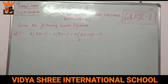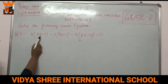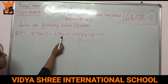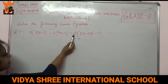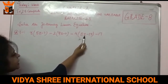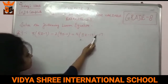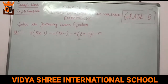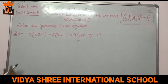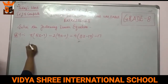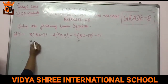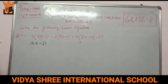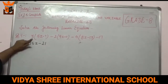Now this is question number 8: 3(5Z minus 7) minus 2(9Z minus 11) equals 4(8Z minus 13) minus 17. Bracket means multiply. So 3 times 5Z gives 15Z, and 3 times 7 gives 21.